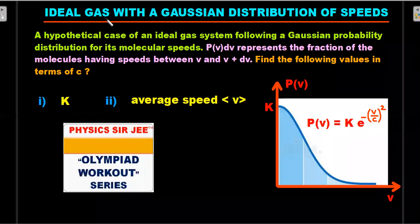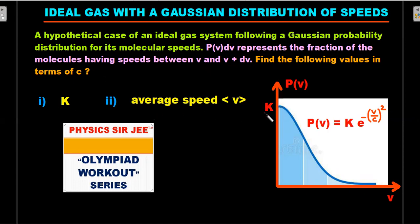The problem statement: ideal gas with a Gaussian distribution of speeds. A hypothetical case of an ideal gas system following a Gaussian probability distribution for its molecular speeds is given, where P(v)dv represents the fraction of molecules having speeds between v and v+dv. Find the value of k in terms of constant c, and also find the average speed of this ideal gas system if molecules follow this distribution. Both values are to be found in terms of constant c. Pause the video and give it a try before continuing.